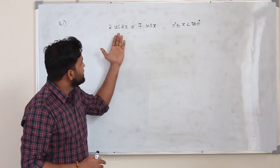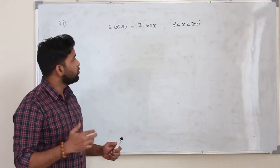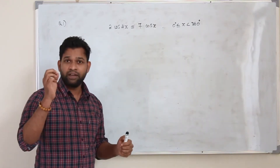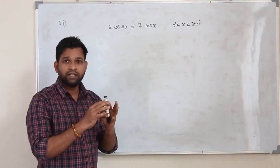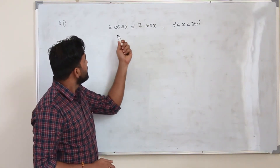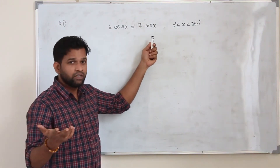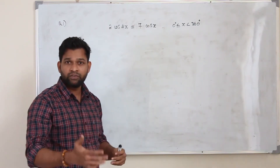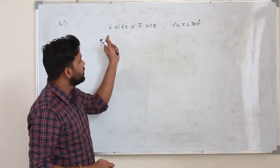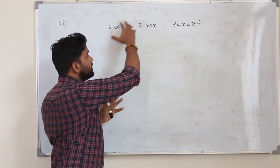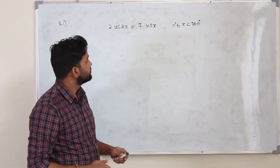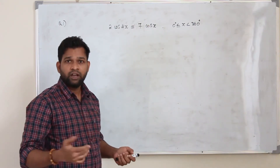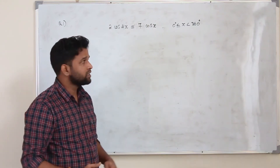We are going to solve this trigonometric equation. When you want to solve a trigonometric equation, step number 1: you need to convert all the trigonometric ratios in this equation to the same trigonometric ratio. Here it's cosine and cosine, so you can skip step number 1. Sometimes you will come across a mixture of cosine and sine, or cosine and tan. If that's the case you need to use trigonometric identities to convert everything to the same ratio. If you have watched all my videos you must be well versed in solving trigonometric equations no matter how complex.